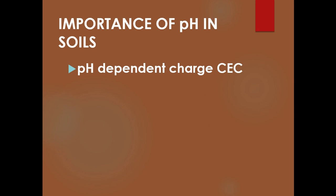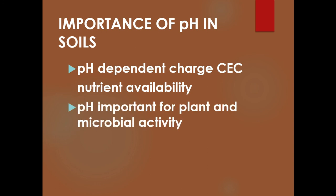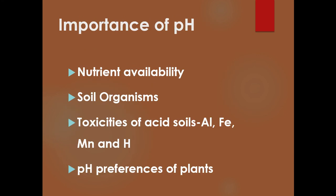The importance of pH in soils: pH-dependent charge influences CEC and nutrient availability. pH matters for plant and microbial activity, as well as the corrosion of structures — cement and similar materials can be more easily corroded depending on soil pH. Other key factors include nutrient availability, soil organism type and activity, toxicity of elements such as iron and aluminum in acidic soils, and the pH preference of plants, since certain plants prefer different pH ranges.